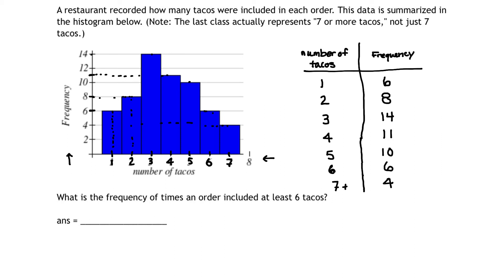We're now ready to use that frequency table to answer the question. What is the frequency of times an order included at least six tacos? The key word here is at least six. We look at our number of tacos per order and look for the places where we have at least six tacos per order. Right here, we have six tacos per order, and here we have seven or more, and both of these qualify as at least six tacos.